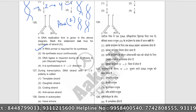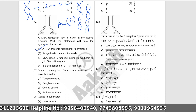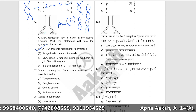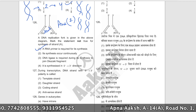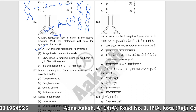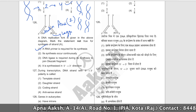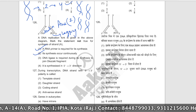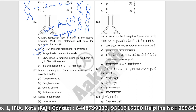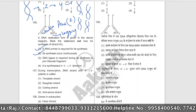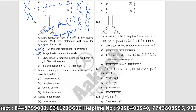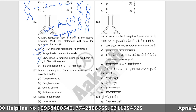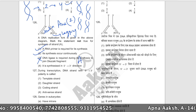In the replication fork, strand A is the leading strand with continuous synthesis, while strand B is the lagging strand. The false statement is that DNA ligase is required during synthesis of strand A to join Okazaki fragments — because Okazaki fragments and DNA ligase are needed for the lagging strand (B), not the leading strand (A). The correct answer is option number three.